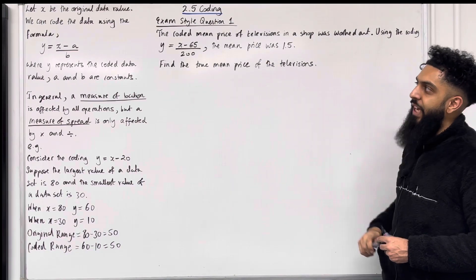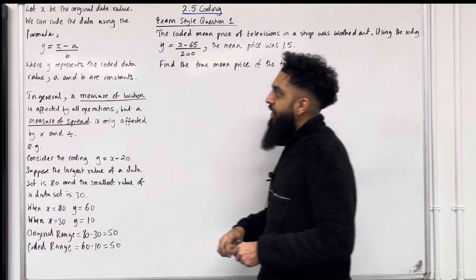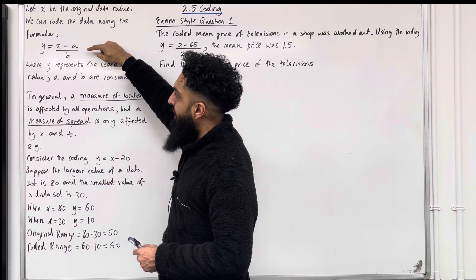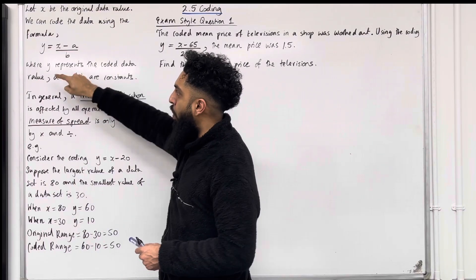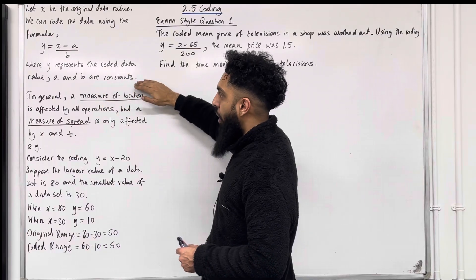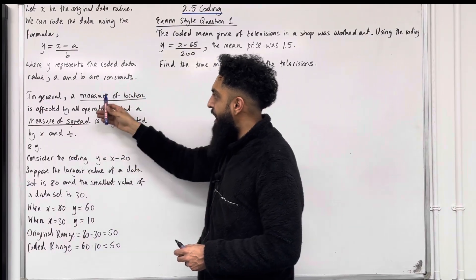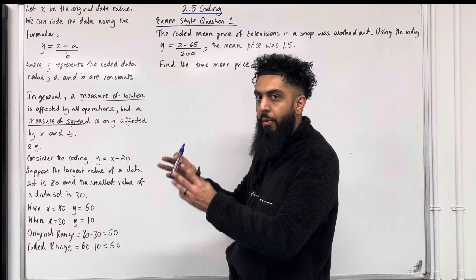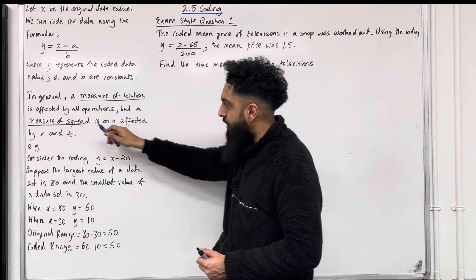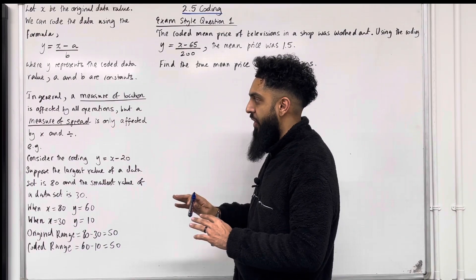Let x be the original data value. We can code the data using the formula y equals x minus a all over b, where y represents the coded data value and a and b are constants. In general, a measure of location is affected by all operations, but a measure of spread is only affected by multiplication and division.